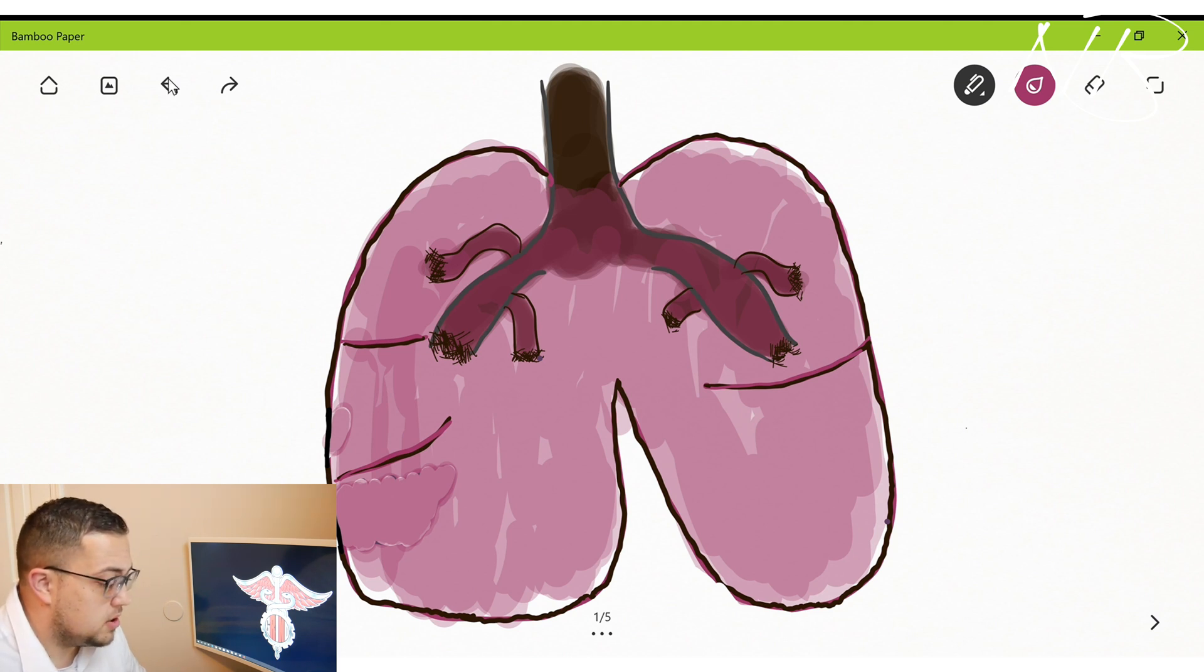Whenever we're taking a look at the lungs here, this is an anterior view of the lungs. On the left hand side you can see we have two lobes, on the right side we have three lobes, demonstrated by these divisions. Coming down into the lungs we can see our trachea coming down into our two main stem bronchi, our left and right side, which then branch off into smaller bronchioles.